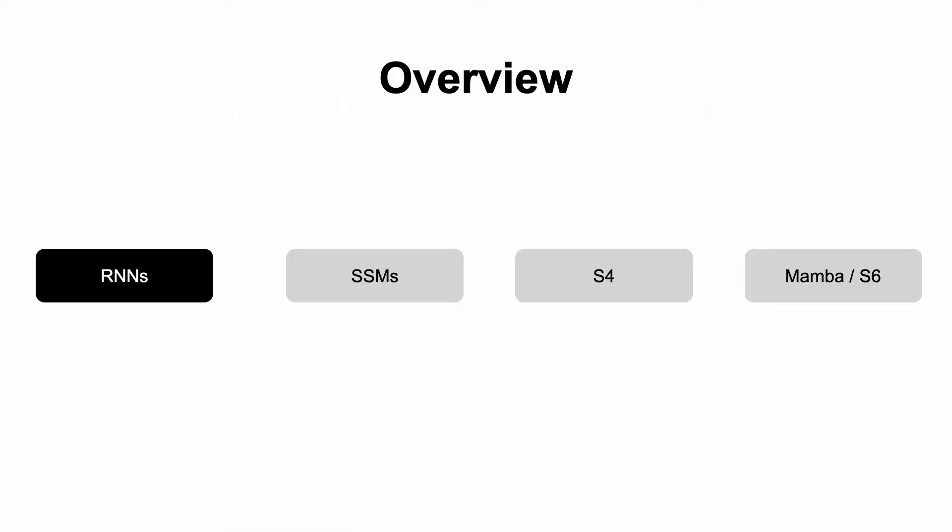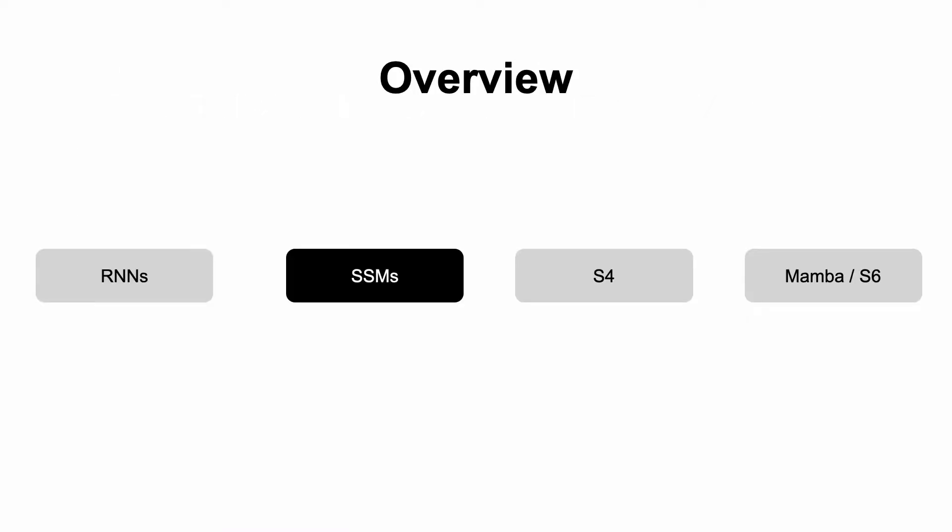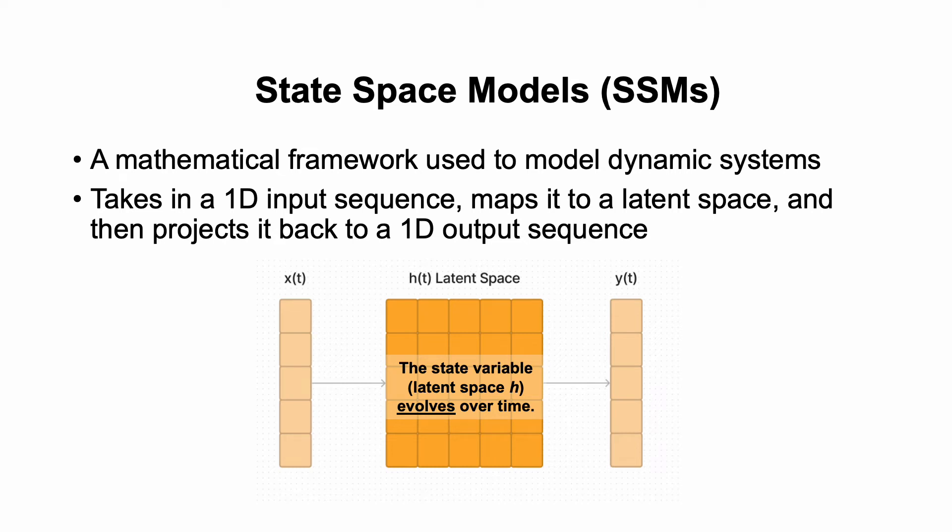Okay, so enough about RNNs, now we're going to move on to state space models. So what is a state space model or an SSM? An SSM is a mathematical framework used to model dynamic systems. Essentially, it takes a one-dimensional input sequence, maps it to a latent space, and then projects it back into a one-dimensional output sequence.